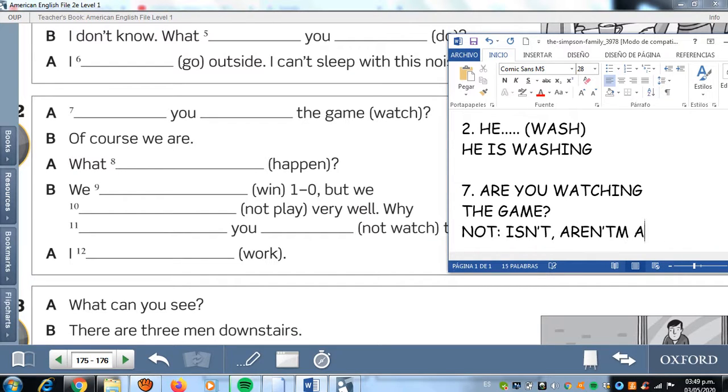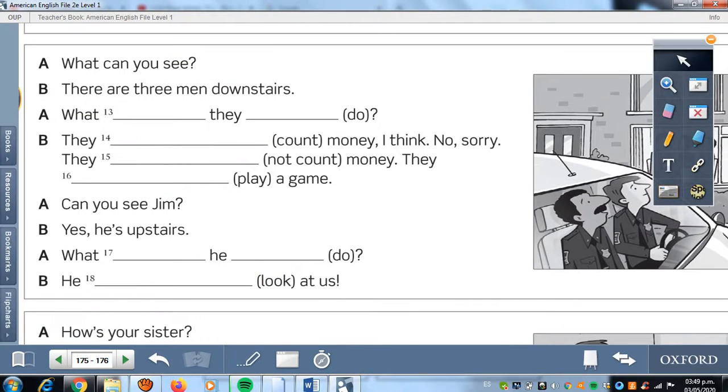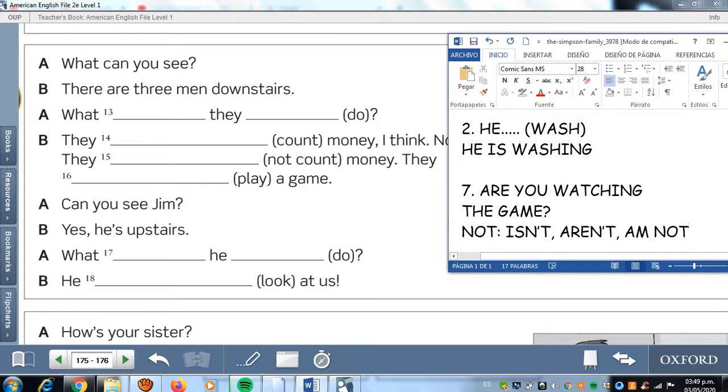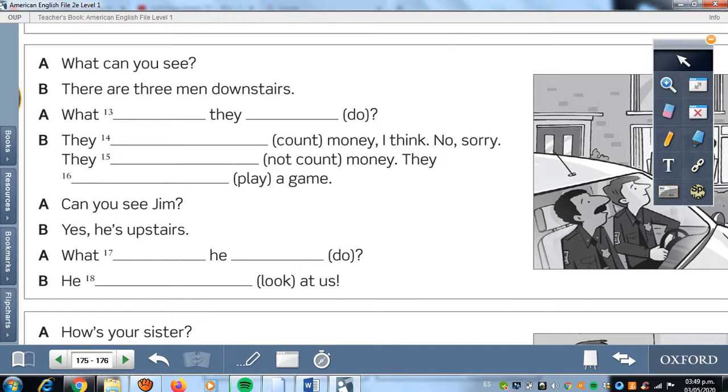Here, what can you see? There are three men downstairs. What are they do? What are they doing? What are they doing? They count money. I think. No, sorry. They not count money. They play a game.